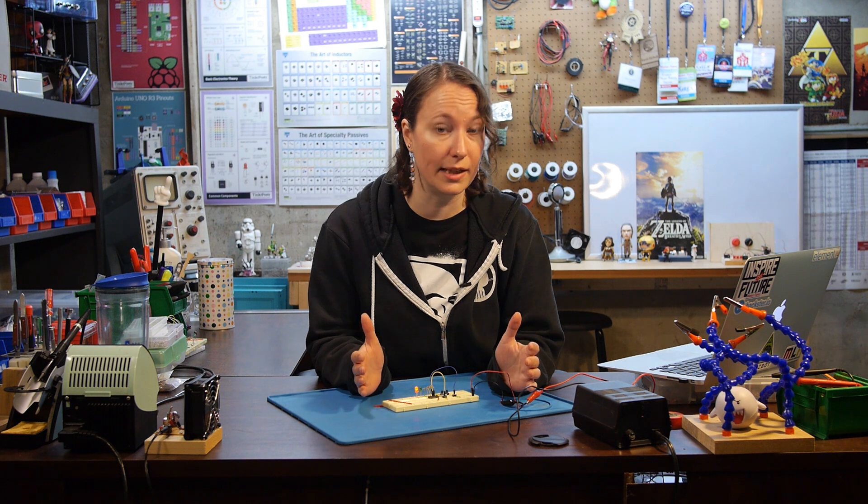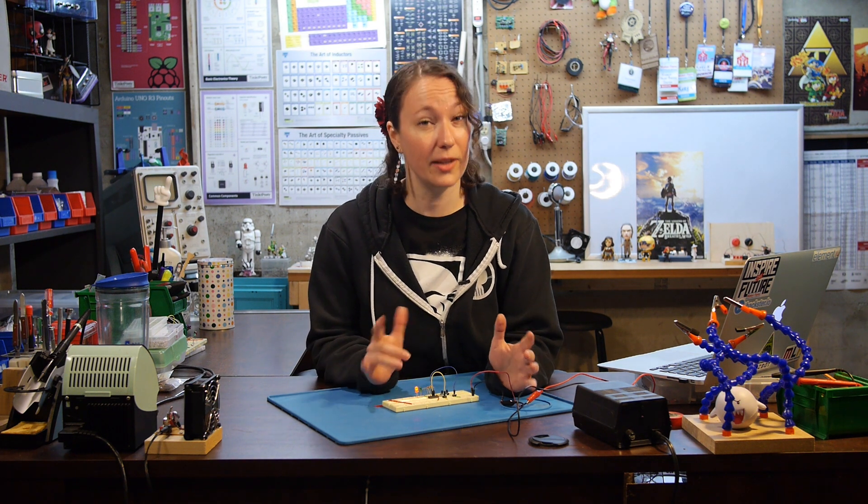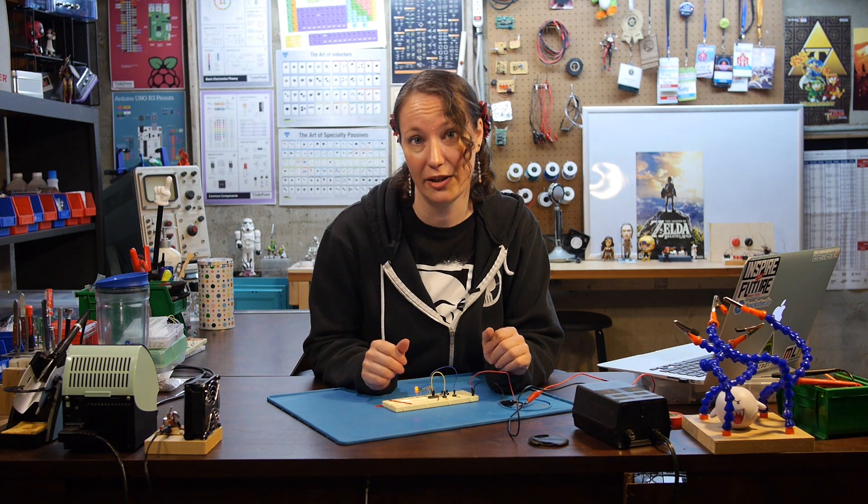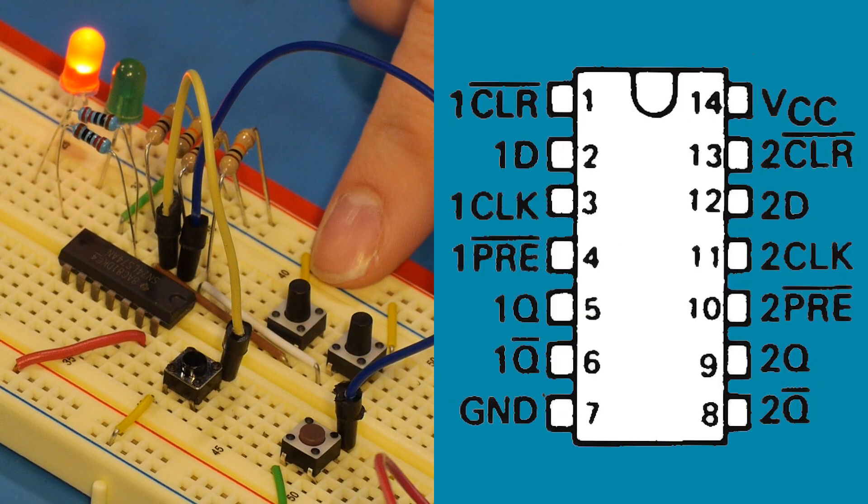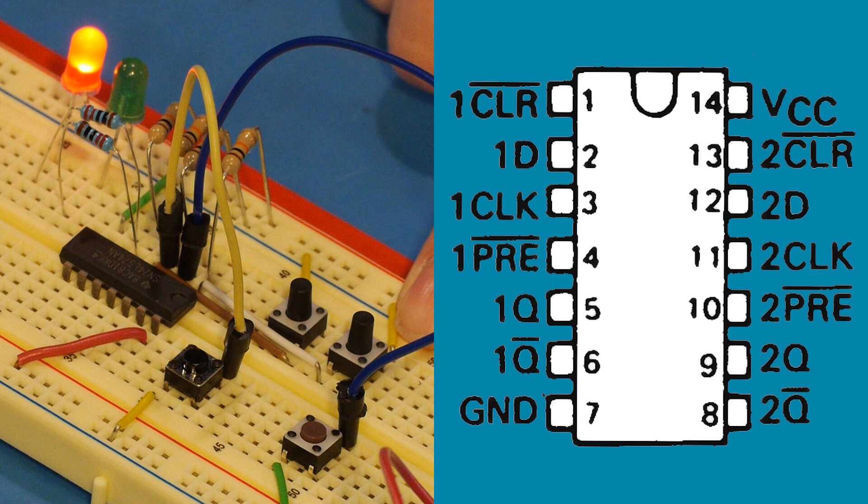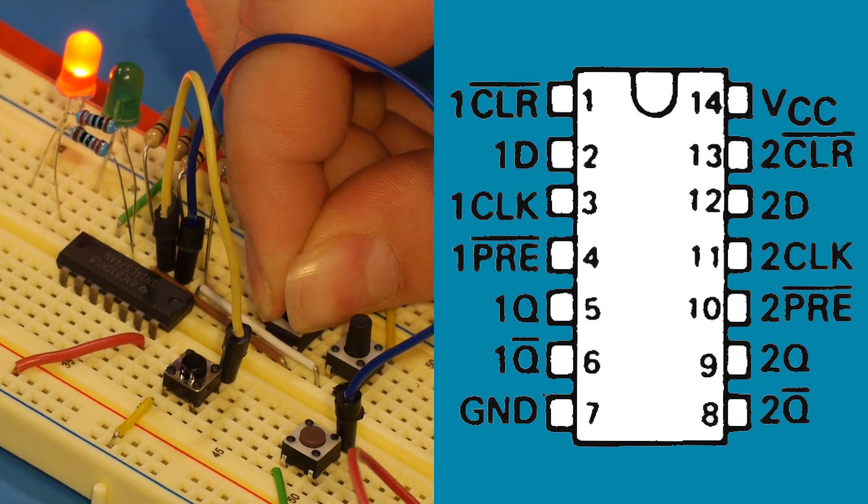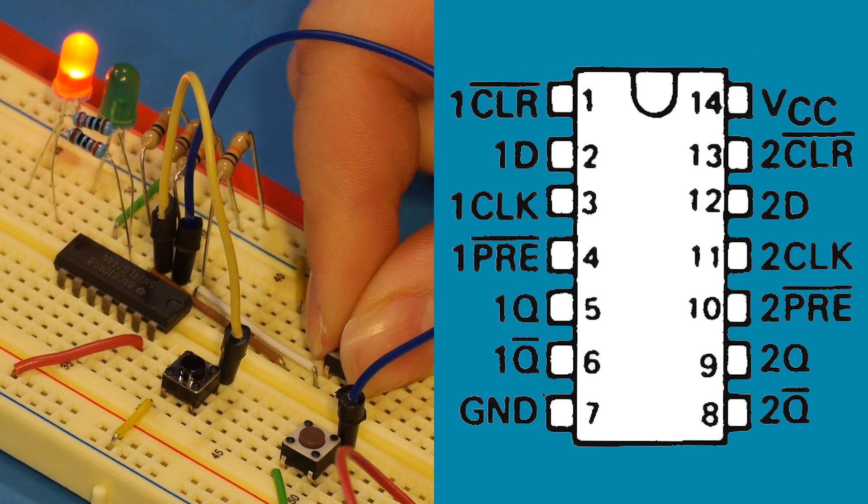What I mean by toggle is the inputs changing, flip-flopping at the press of a single button. Let's take a look. To start, we want preset and clear to always be inactive. So we'll remove their buttons, but leave the pull-up resistors to keep them held inactive high.